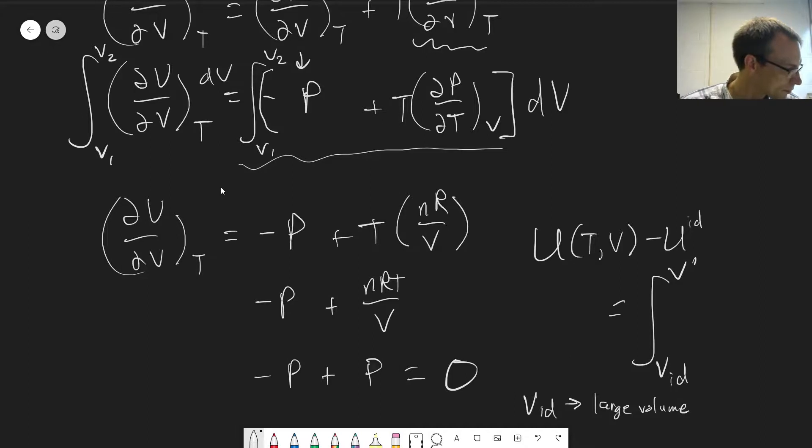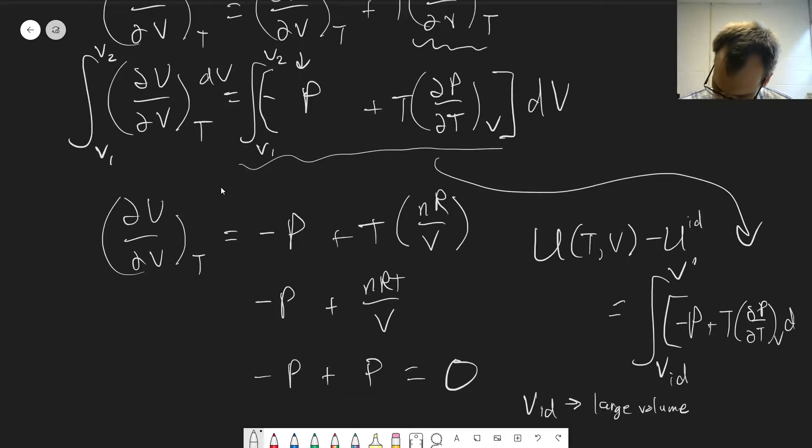Call it V prime. And then we integrate this expression. That goes into here, so we have our, write it in the same order, minus P plus T dP/dT at constant V dV. Because now this is all pressure, temperature, volume.